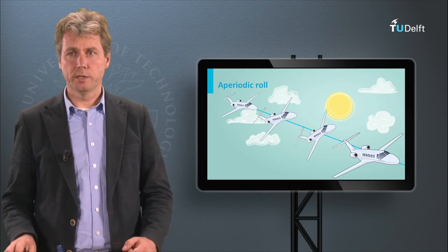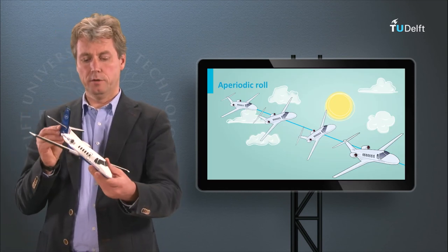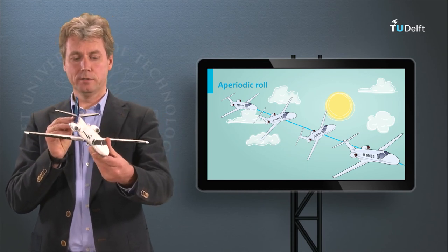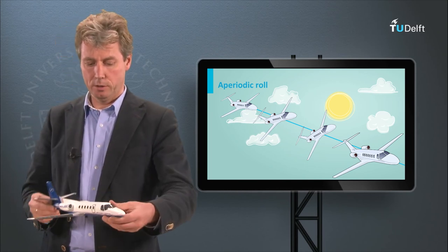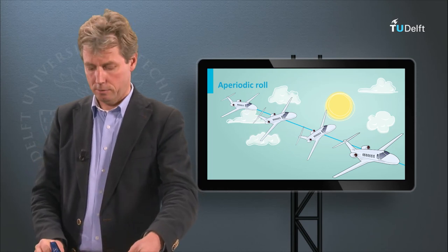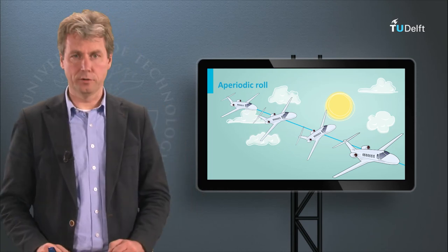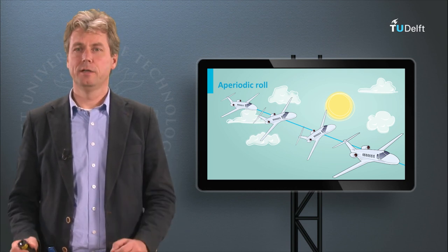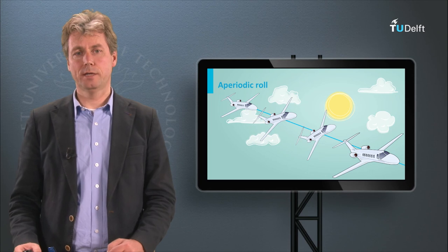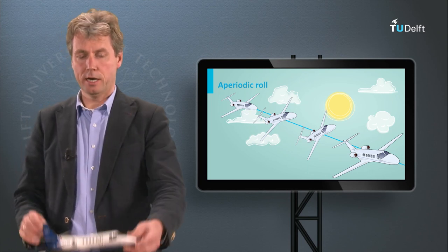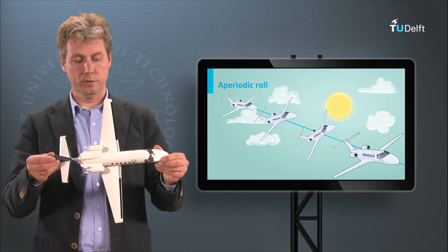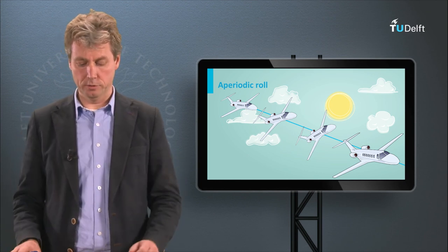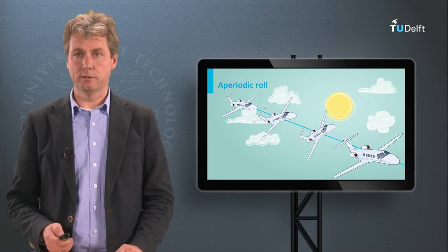The final one is the aperiodic roll — a short excitation in roll movement which is automatically corrected. It doesn't have a period, is very quickly damped, and is a result of the vertical tail being on top of the fuselage. So those are five typical motions that every standard configuration aircraft — wing first and tail aft, with one vertical tail on top — experiences.